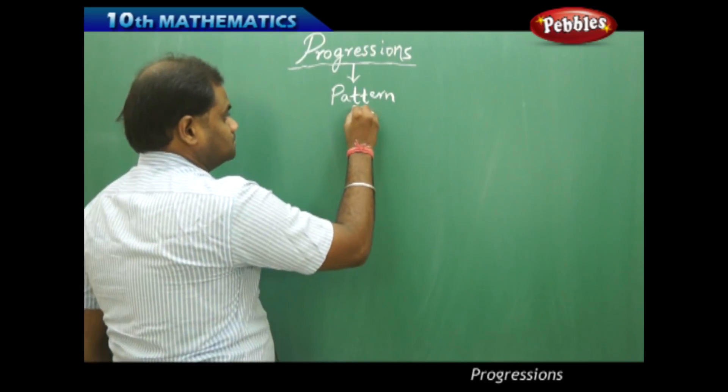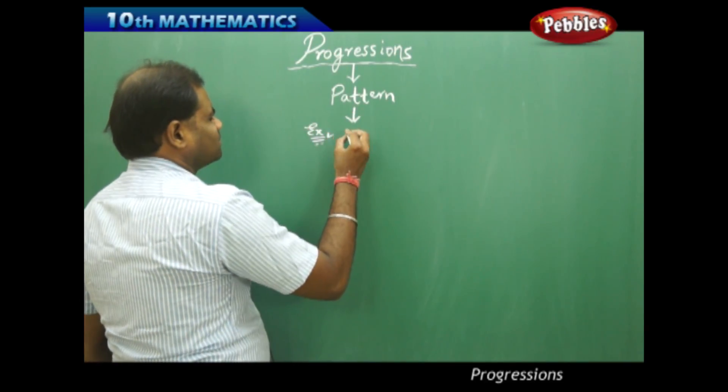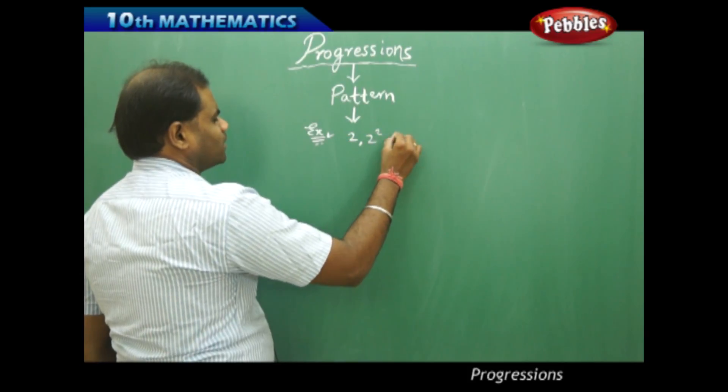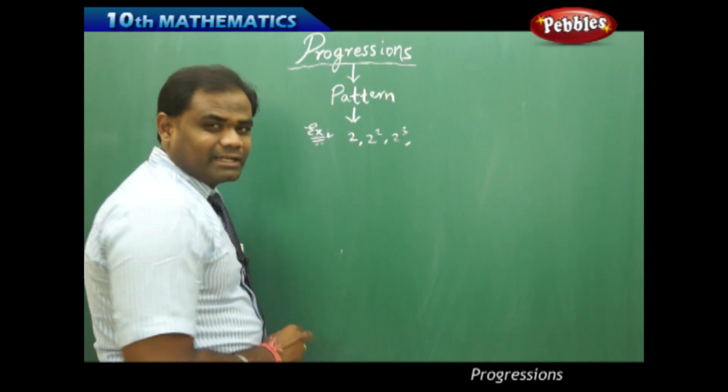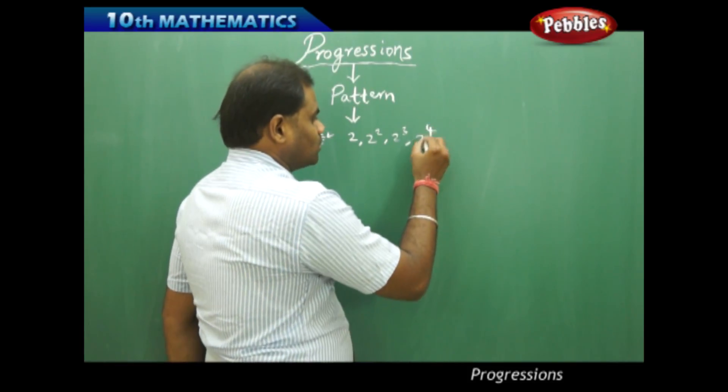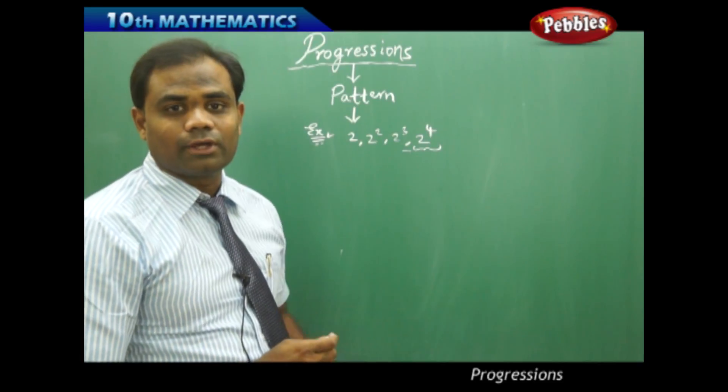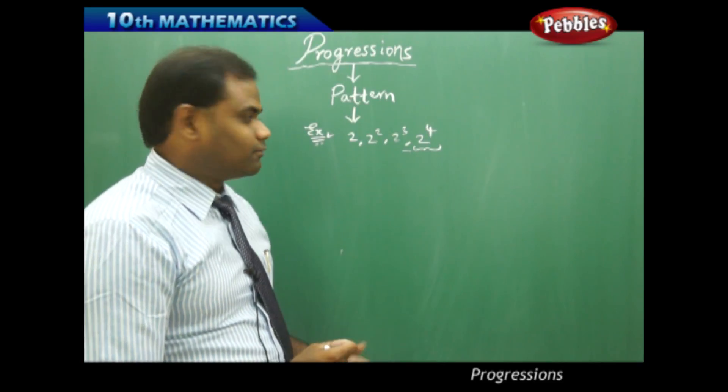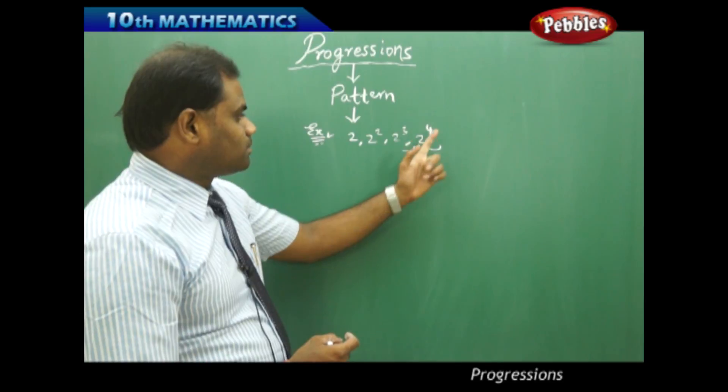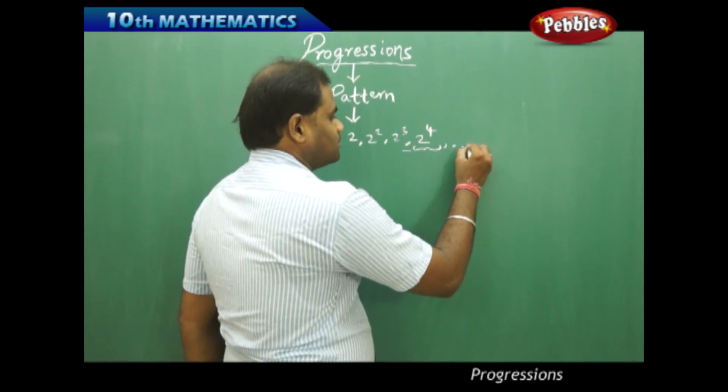The pattern can be, for example, if I take 2, 2 square, 2 cube then immediately I can say the next term is 2 power 4 because I can say this because I know that the first three terms are following a certain pattern. Therefore 2, 2 square, 2 cube, 2 power 4, 2 power 5, 2 power 6 is how I identify the pattern.